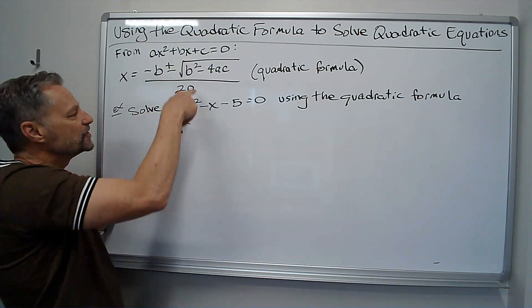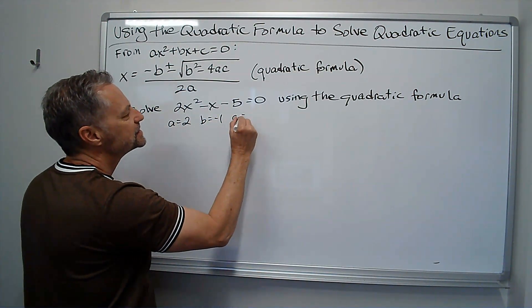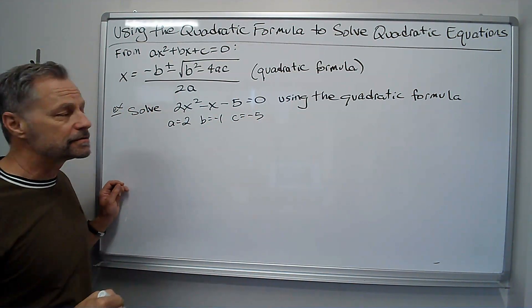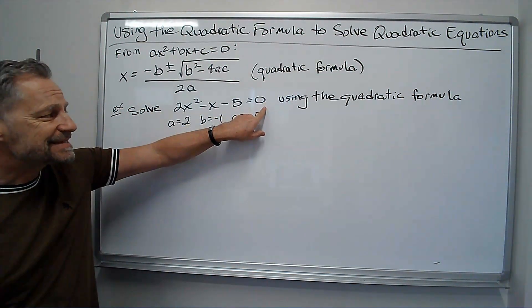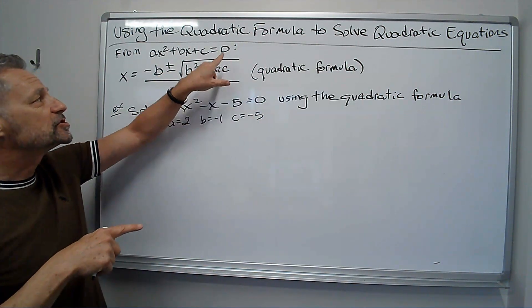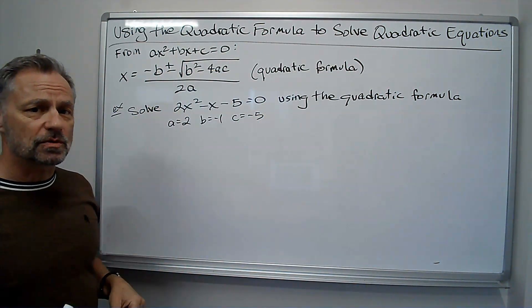b is the x coefficient, b is negative 1, and then c is negative 5, the constant. Now, if that's not a zero, you need to make it a zero first so it's in this form before you use the quadratic formula.